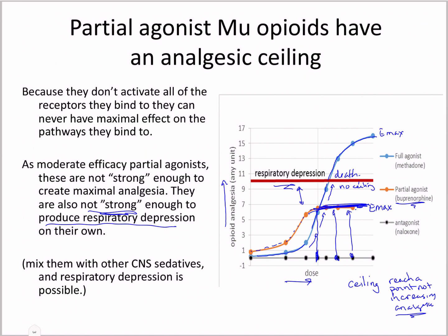However, that same ceiling effect means that you're not going to overdose someone, because it's not going to be strong enough to produce respiratory depression on its own. One thing to note is that while buprenorphine doesn't have enough effect to cause respiratory depression given by itself, it can contribute to respiratory depression when given with other drugs that also cause that — mixed with a barbiturate, alcohol, and a partial agonist opioid, they can all contribute until someone can die of an overdose. But in and of itself, buprenorphine wouldn't do that.